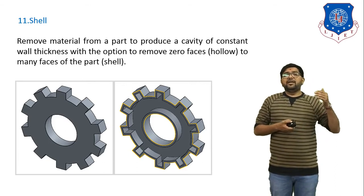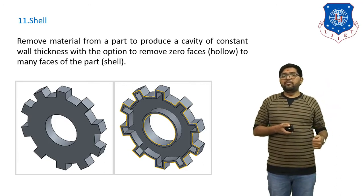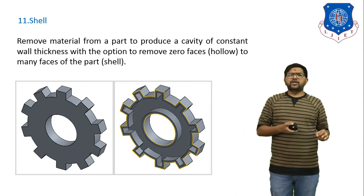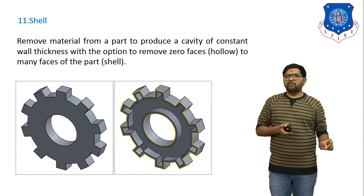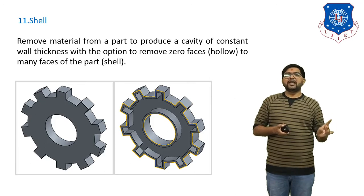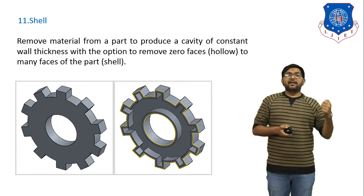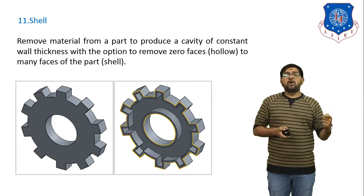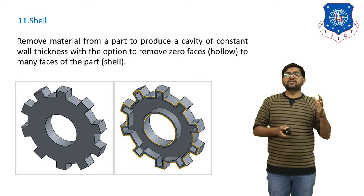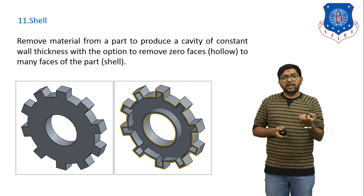So in this session we discussed many features of feature-based modeling: extrude, subtract, revolving, chamfer, fillet, linear pattern, circular pattern, mirror image, shell, draft, hole, hole wizard, counterbore, and countersink — all are features of modeling software.